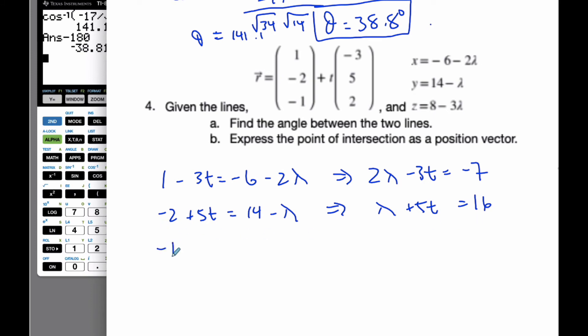Finally, my z value says negative 1 plus 2t is equal to 8 minus 3 lambda. I put this across, I get 3 lambda plus 2t is equal to 9.